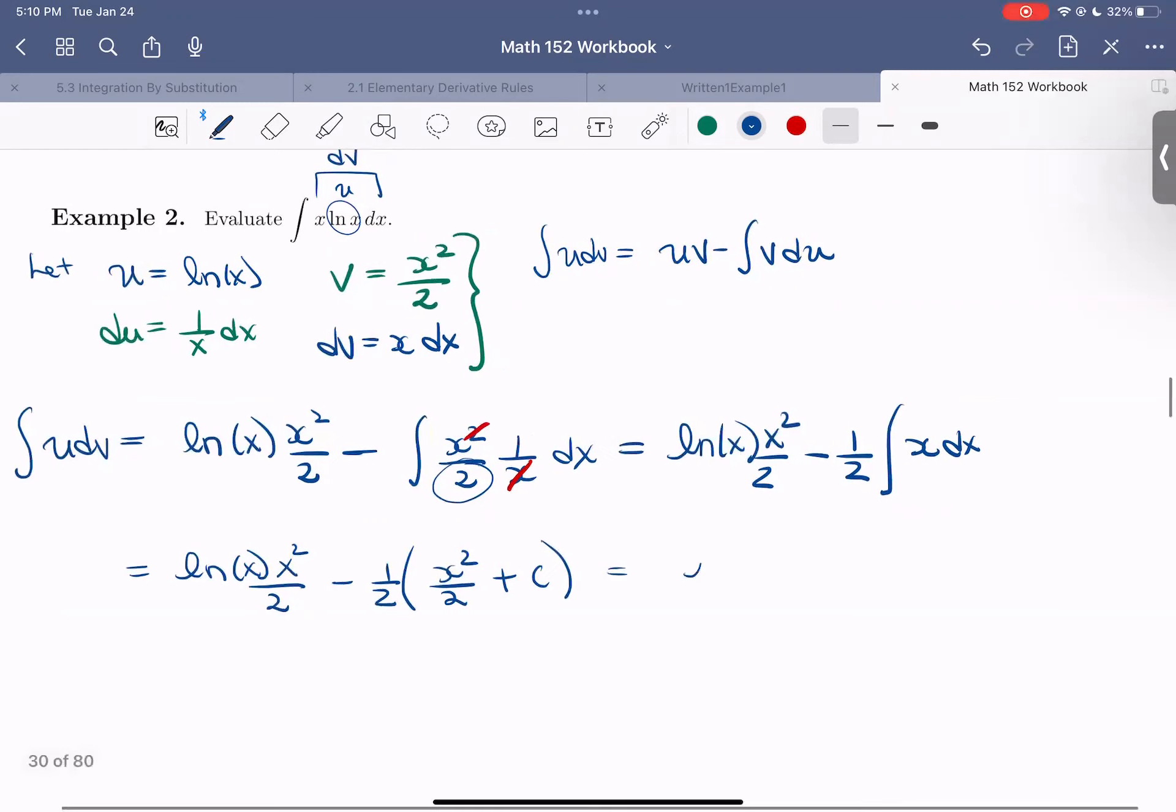So now simplifying and cleaning this up, I get ln of x times x squared over 2 minus x squared over 4 plus c. So we could multiply that negative one half into the c, but then it just becomes a new constant. So I can just call it c still. Okay, so there is our integral.